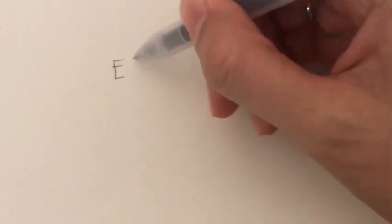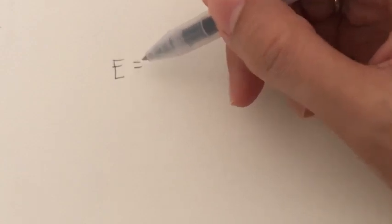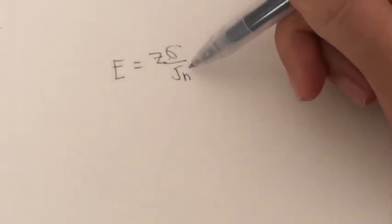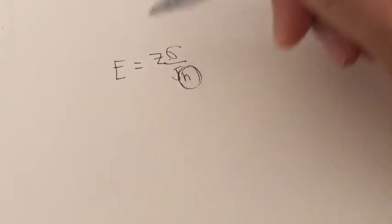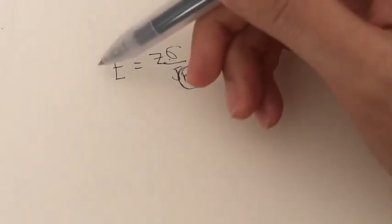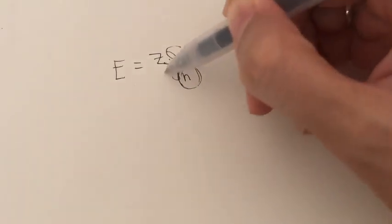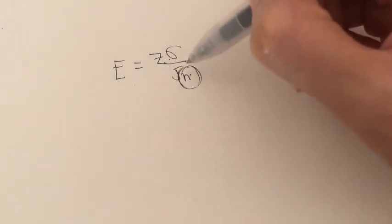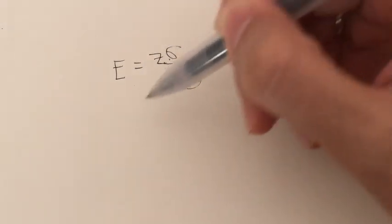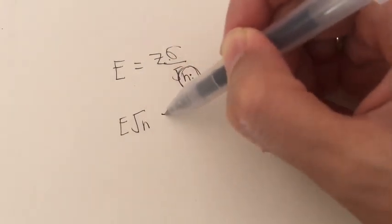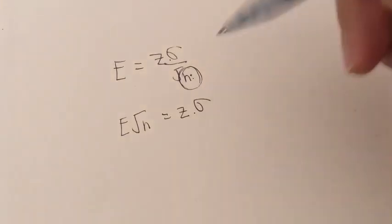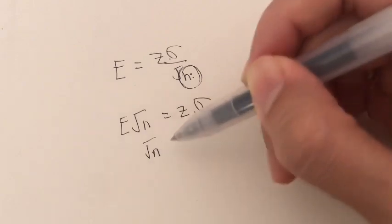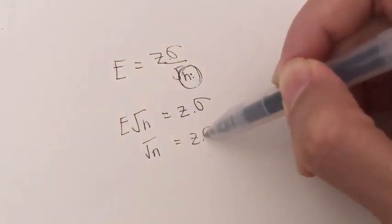The error formula is E equals — remember, E or margin of error consists of two parts: the confidence level, which is Z, as well as the standard error, which is sigma over the square root of n. We can rearrange this formula to make n the subject. Since it's division, we bring it to the other side so it becomes multiplied: E times square root of n equals Z times sigma. So we have square root of n equals Z times sigma over E.